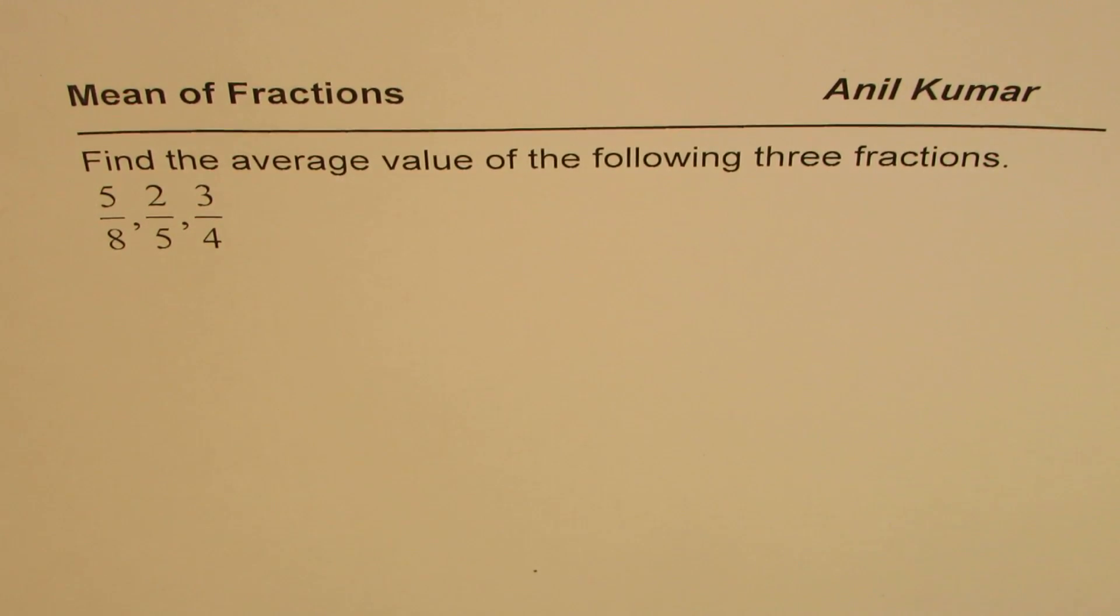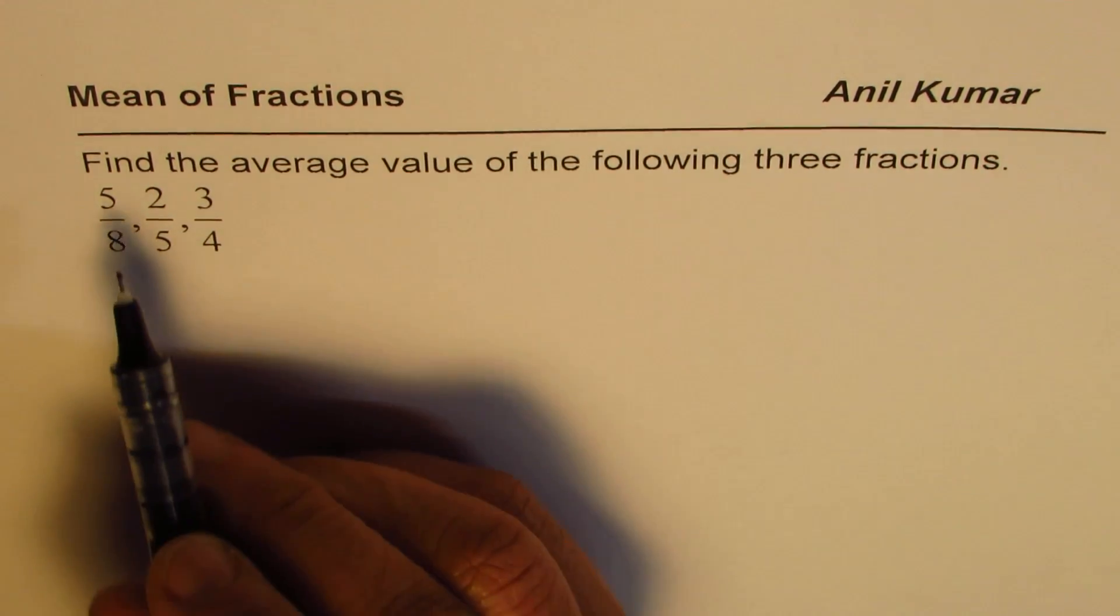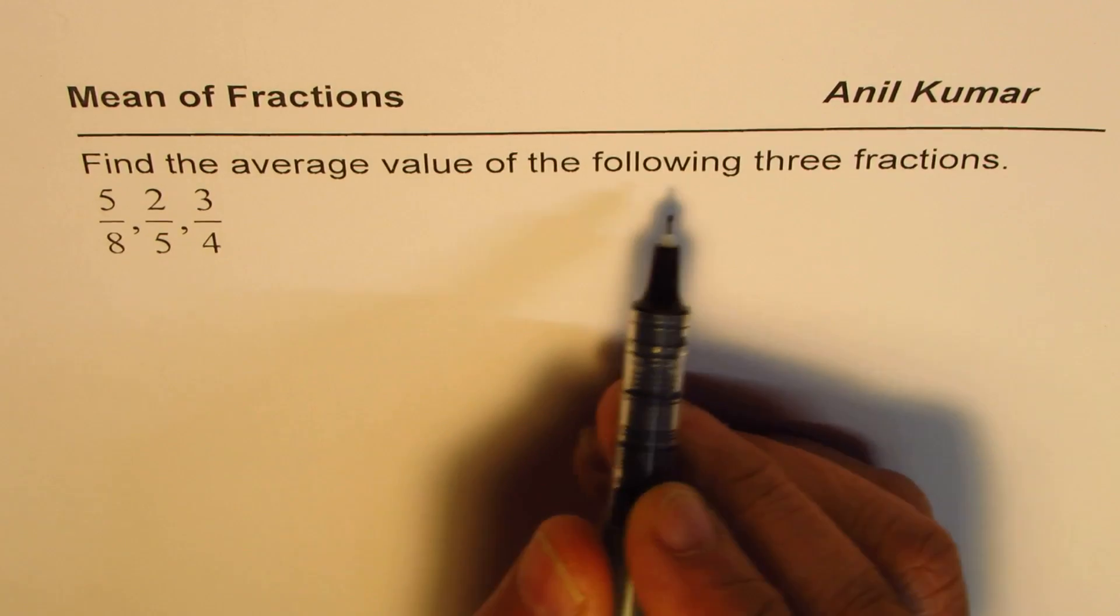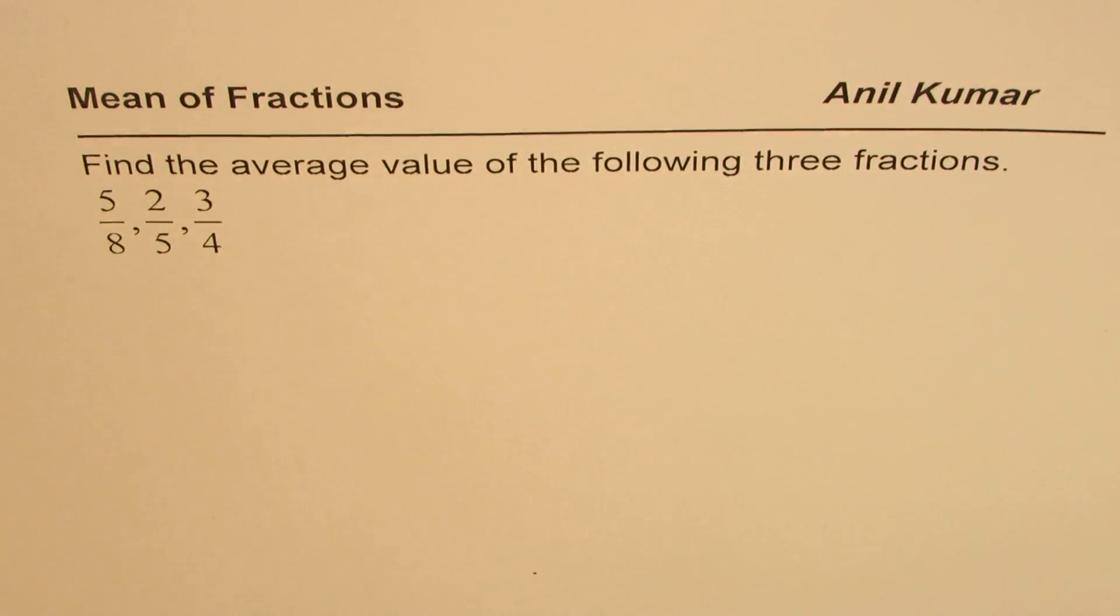We are working on mean of numbers and this time we have taken fractions as our numbers. The question here is find the average value of the following three fractions: 5 over 8, 2 over 5, and 3 over 4.